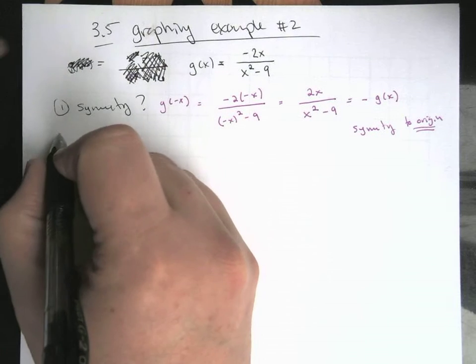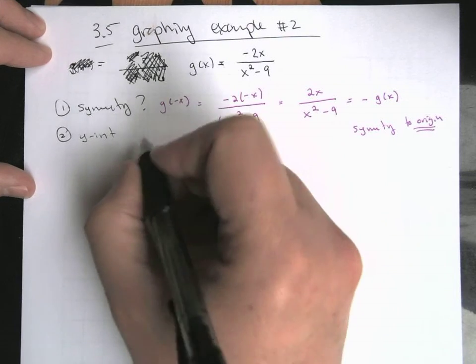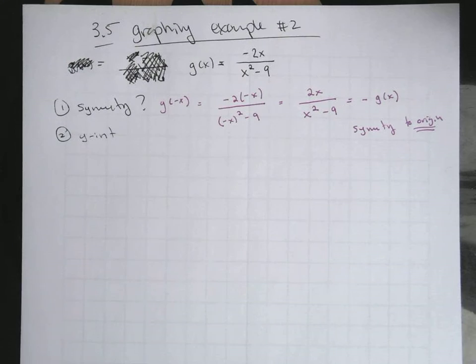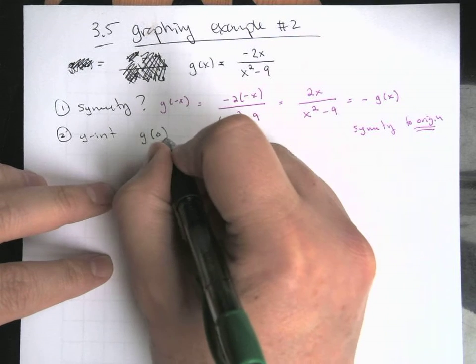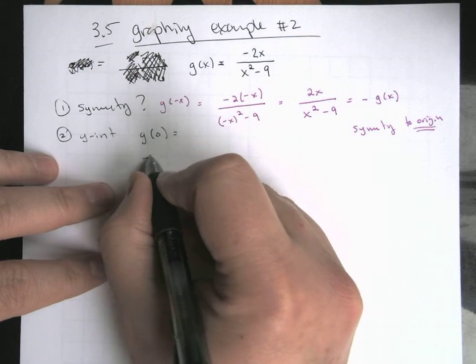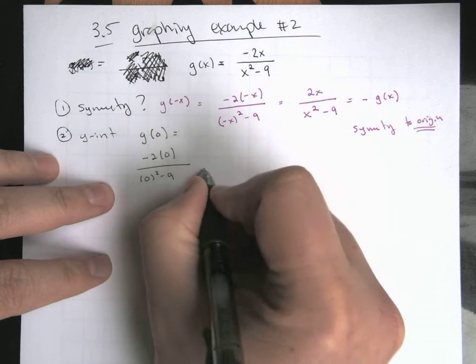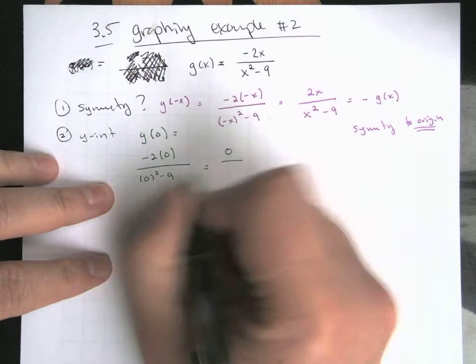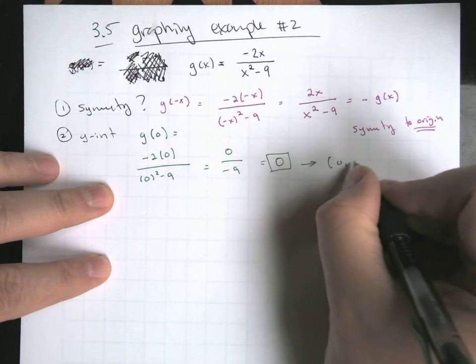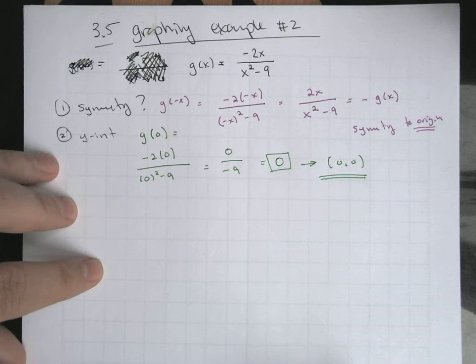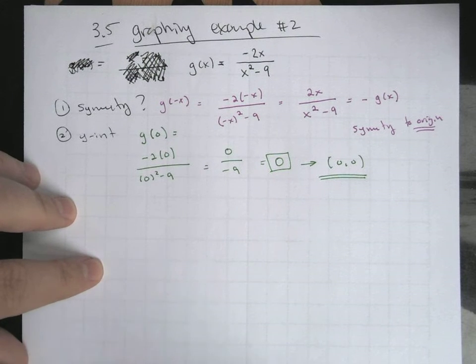Y-intercepts is next. Now I just said y-intercepts, but of course there's one and only one. So that's going to be our value when we sub in zero, g of zero. So that's going to be negative two times zero over zero squared minus nine. That's a zero on top and then it's over a negative nine. That's going to make the whole thing zero. So that's going to go through our origin, zero, zero.